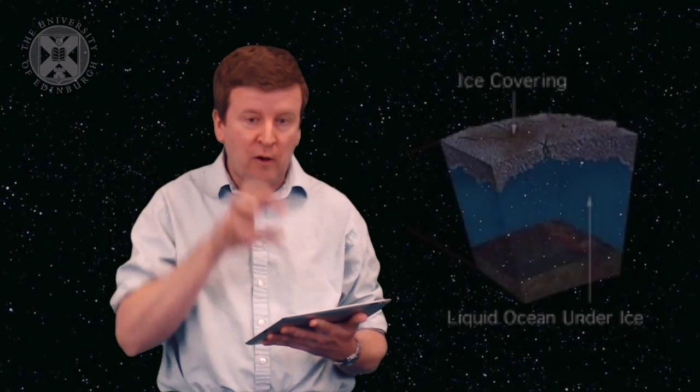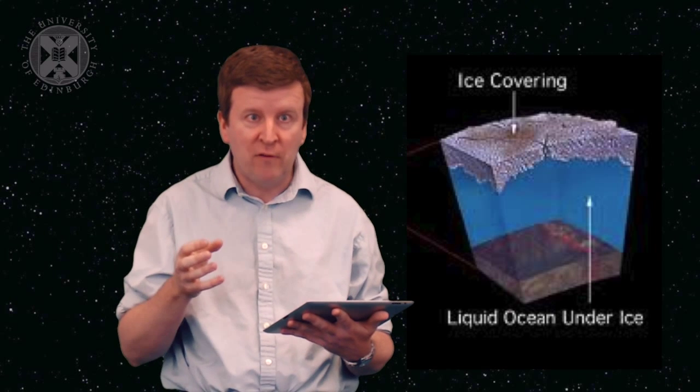This would make sense if the interior of the planet was rotating faster than the exterior. What that suggests is that the core of Europa is detached from the icy surface.